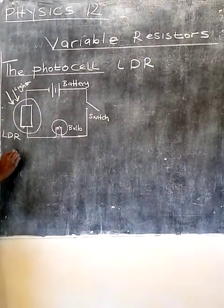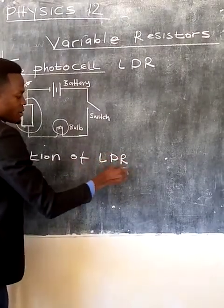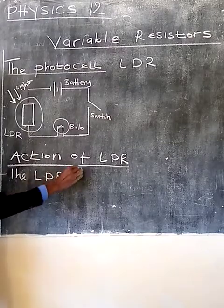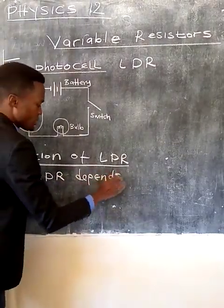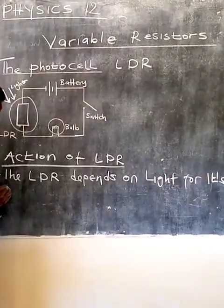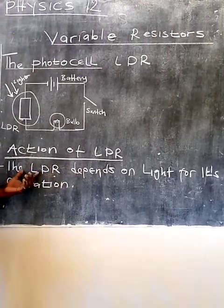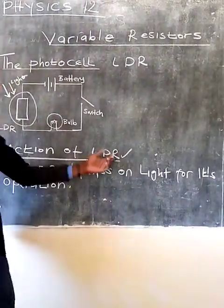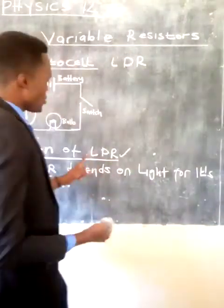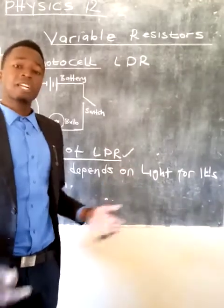The action of the LDR: it depends on light for its operation. In most cases, this is the component used in making those automated bulbs — at night they switch on on their own, and during the day they switch off. This is the component they use, so you need to understand the way it functions — how it makes the bulbs switch on at night and switch off during the day.